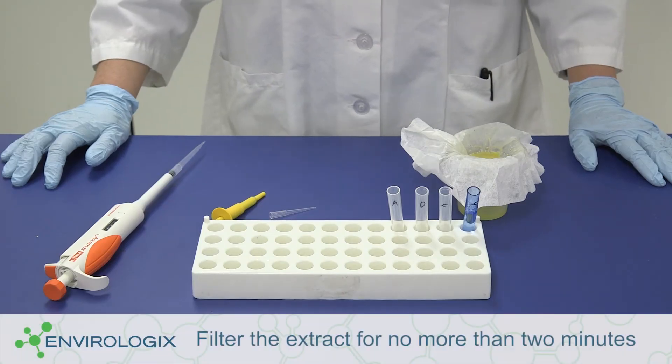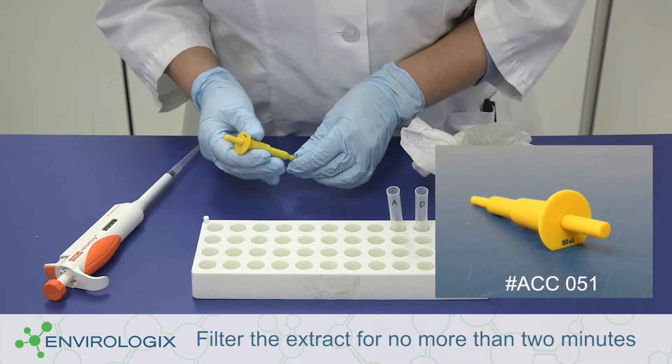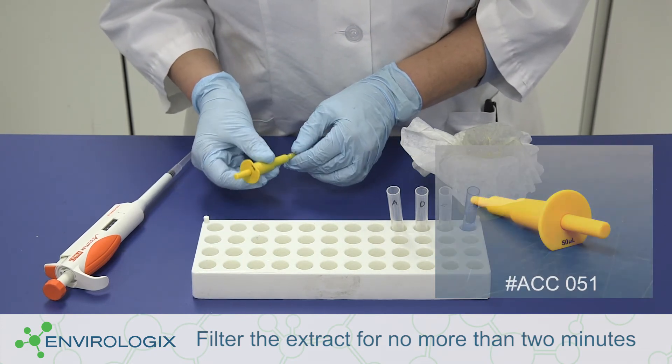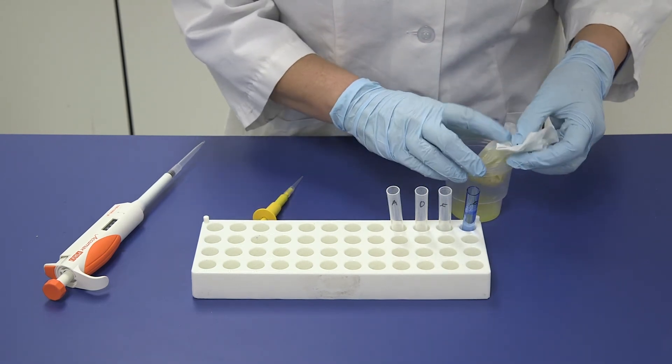Next, add the clarified extract. Place a clean tip on a 50 microliter pipette. Transfer one pipetteful of clarified extract to the blue dilution tube labeled F.